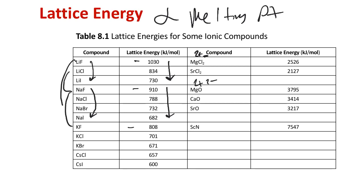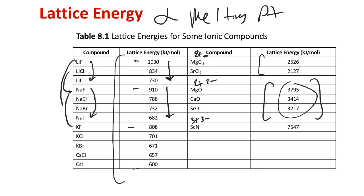Compounds with 2+/1- behavior have higher melting points due to higher lattice energies from more highly charged ions. The +1/-1 range is about 600 to 1,000 kJ per mole; 3+/3- compounds like scandium nitride have humongously high lattice energies of about 7,500 kJ per mole, because more highly charged ions require much more energy to separate into their gaseous counterparts.